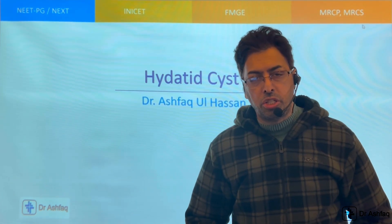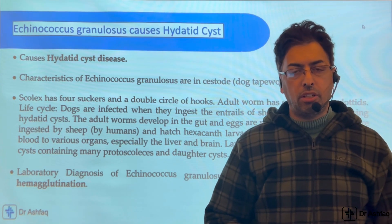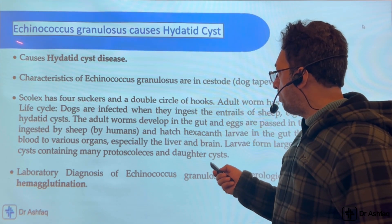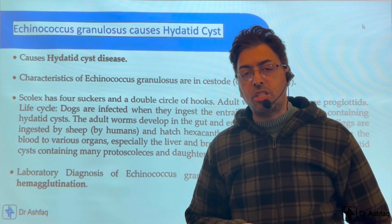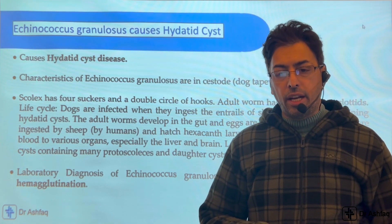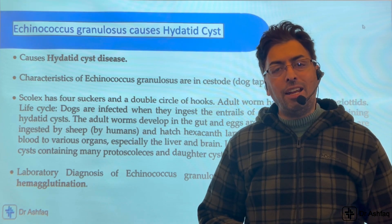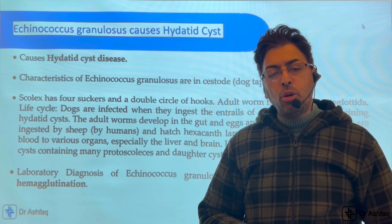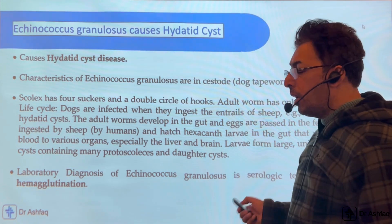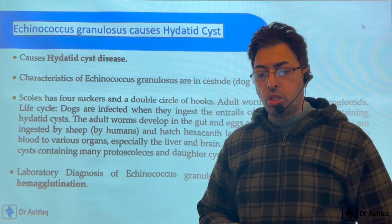As far as hydatid cyst is concerned, the first thing to remember — even at the most basic level — is what causes it: Echinococcus granulosus. The hydatid cyst of the liver is caused by the organism Echinococcus granulosus, and it is most commonly found in the liver. Echinococcus granulosus is also called the dog tapeworm — important to remember, as questions are asked distinguishing which is the fish tapeworm and which is the dog tapeworm.